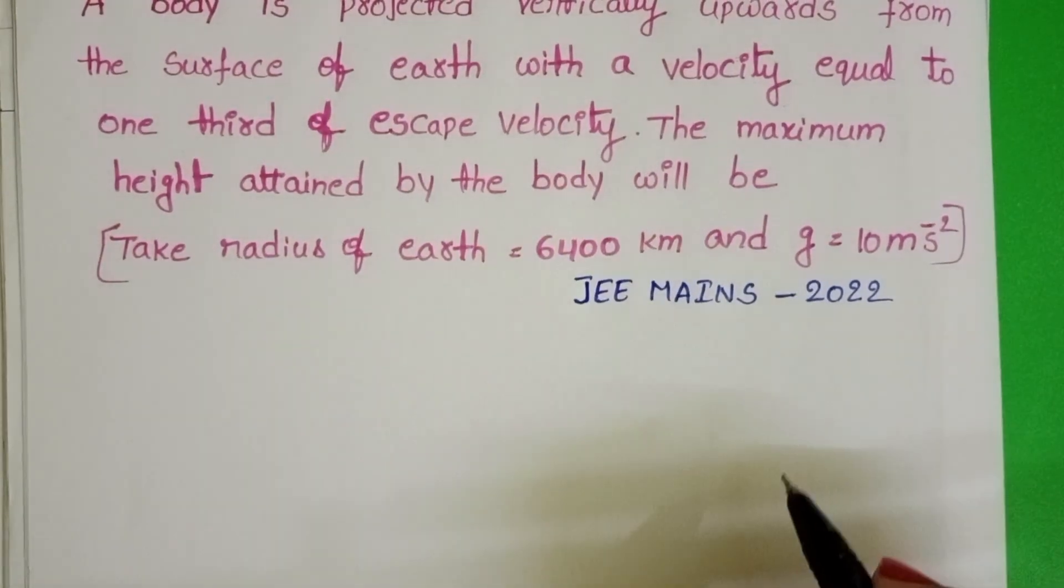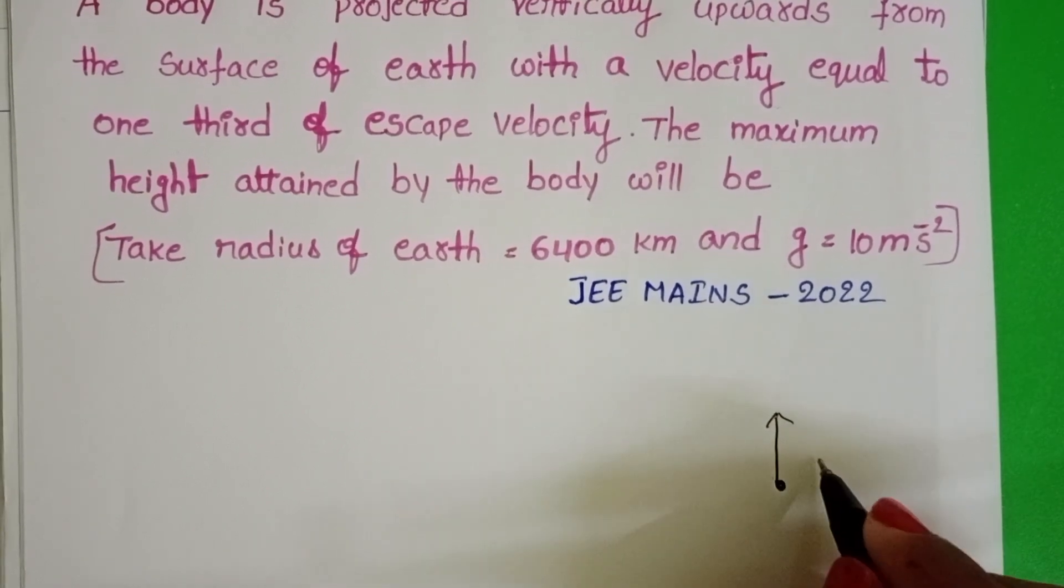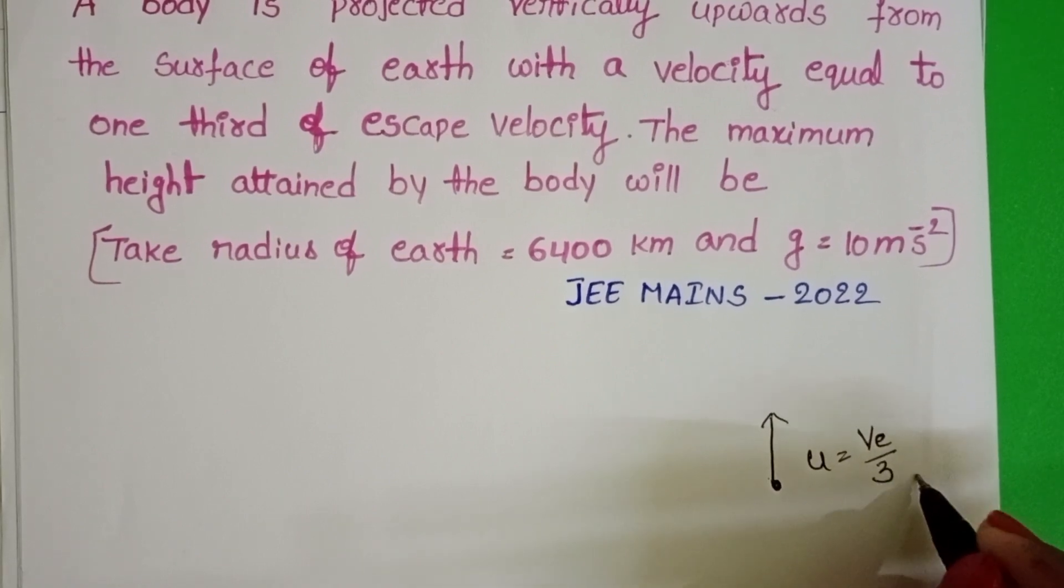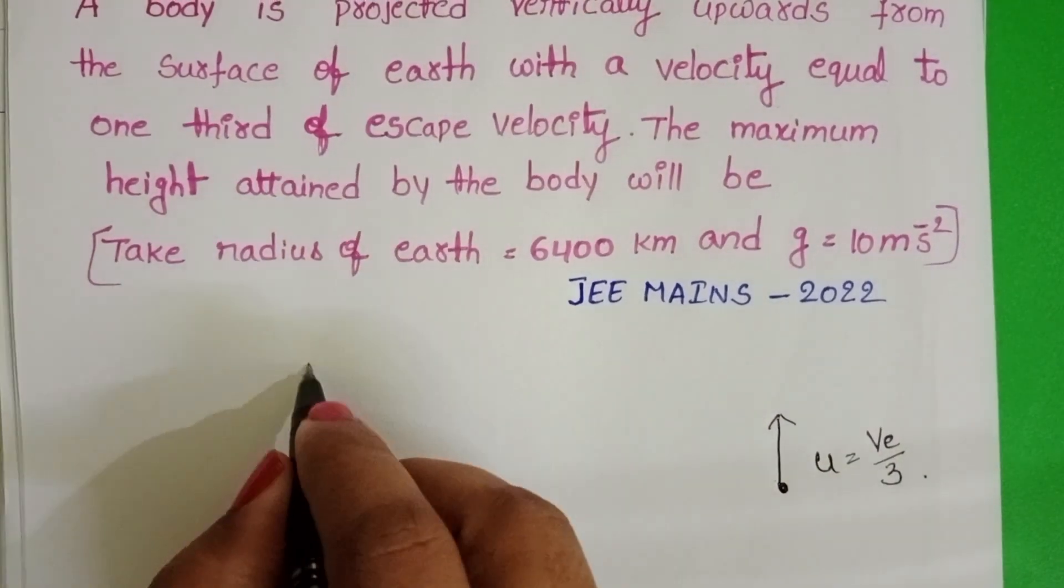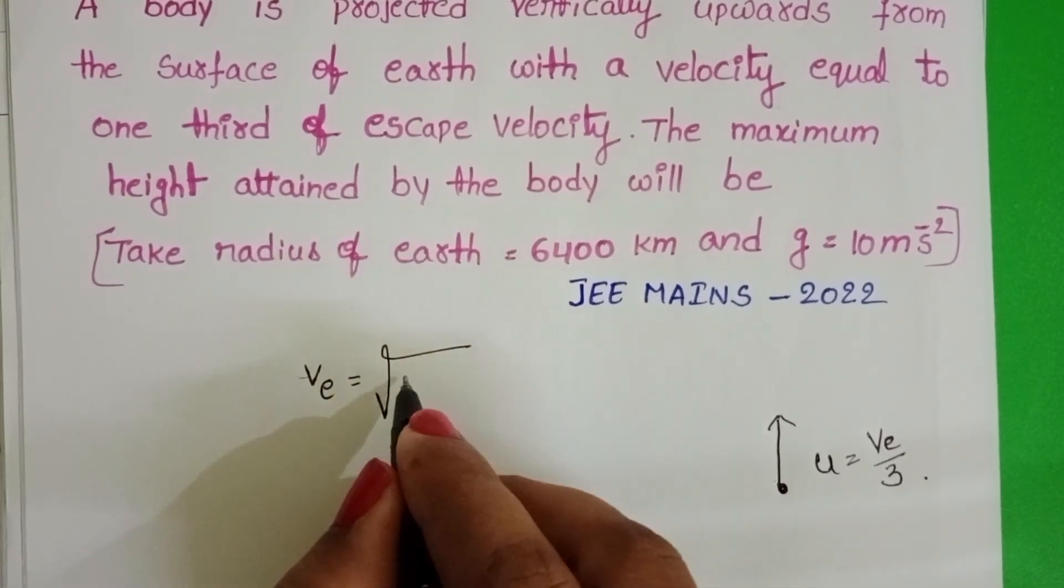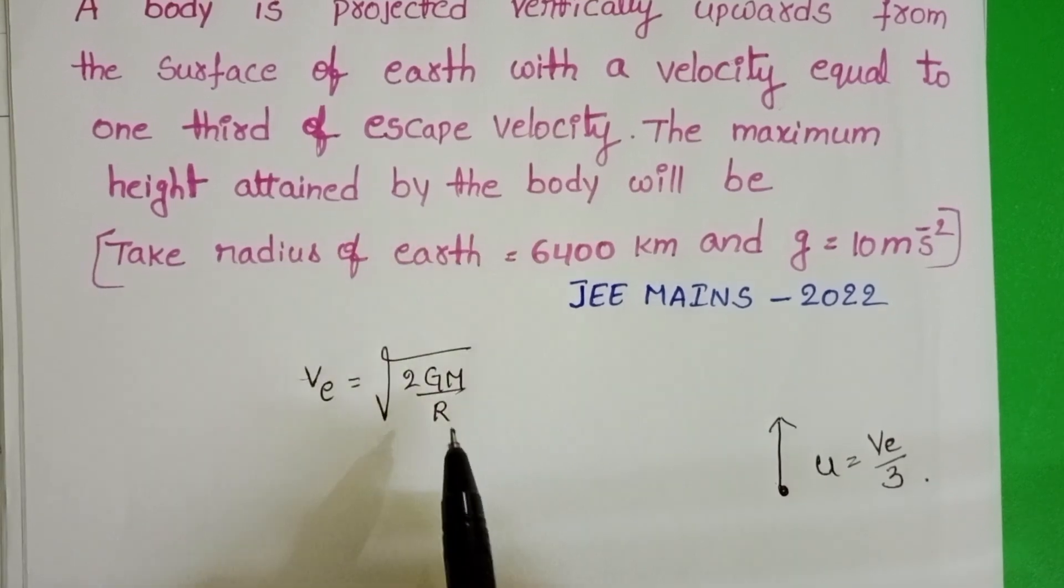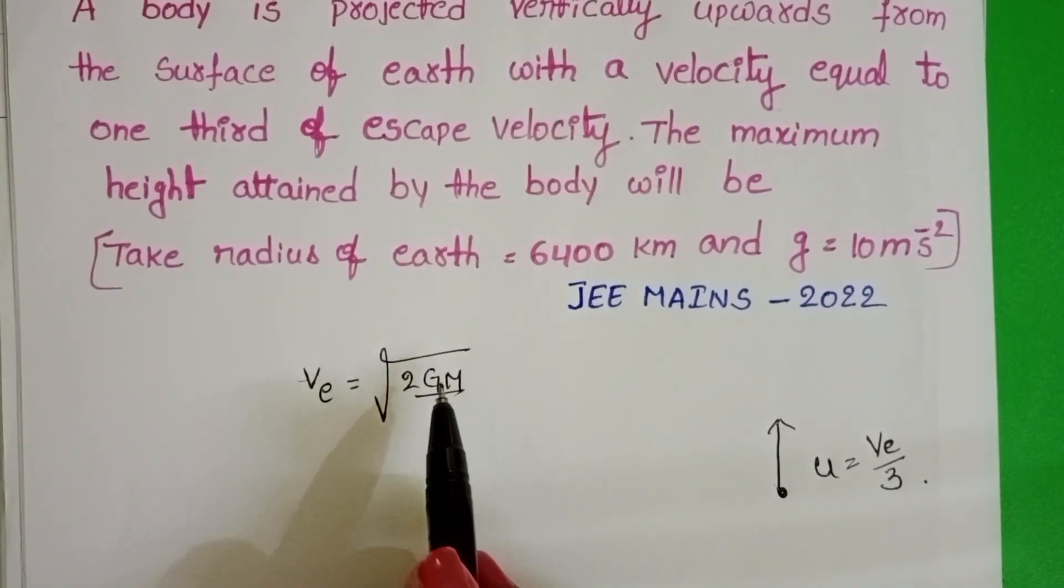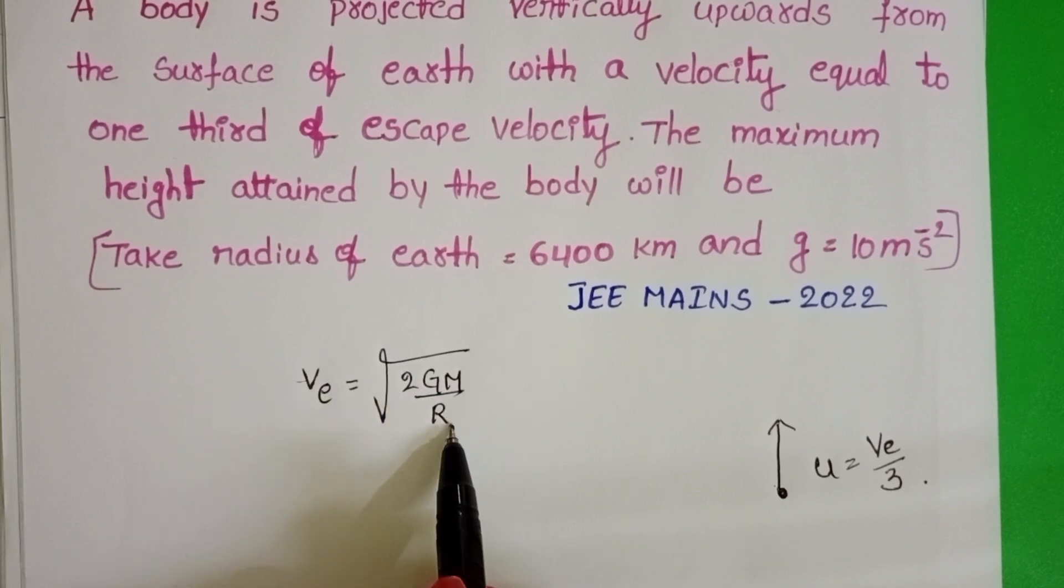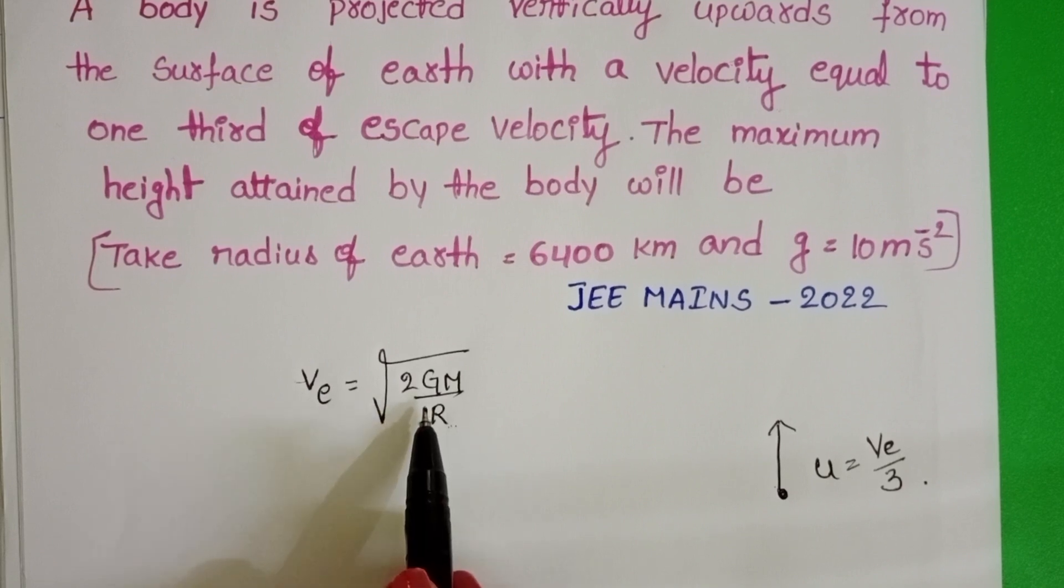In given question, a body is projected in upward direction with initial velocity one third of the escape velocity. We know escape velocity ve equals square root of 2GM by R, where M is the mass of the planet, G is universal gravitational constant and R is the radius of the planet. This is the formula for the escape velocity.